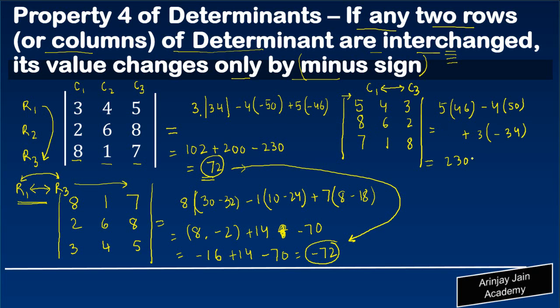So you get 230 minus 200 minus 102, or you get minus 72, which is again, if you compare it with the original value which was 72, only the sign has changed. So this property—that if any two rows or columns of a determinant are interchanged, its value changes only by a minus sign—is what we have proved in this particular video.